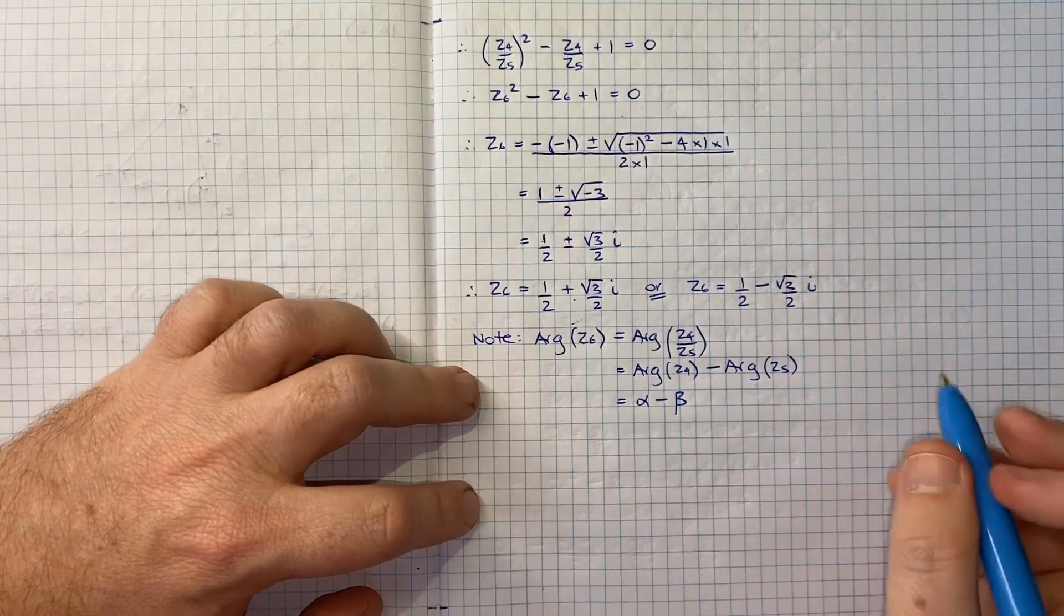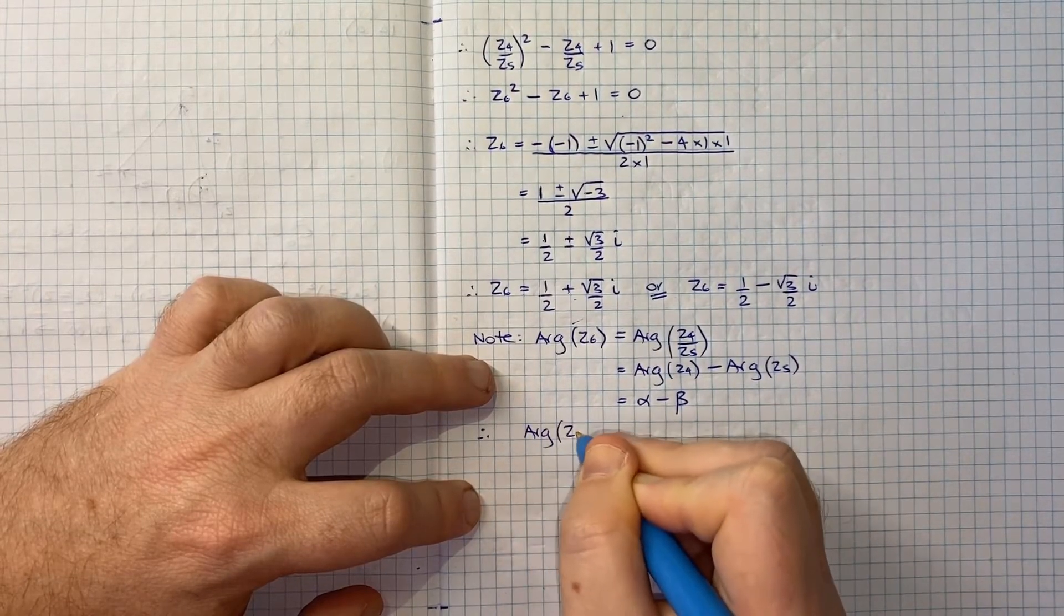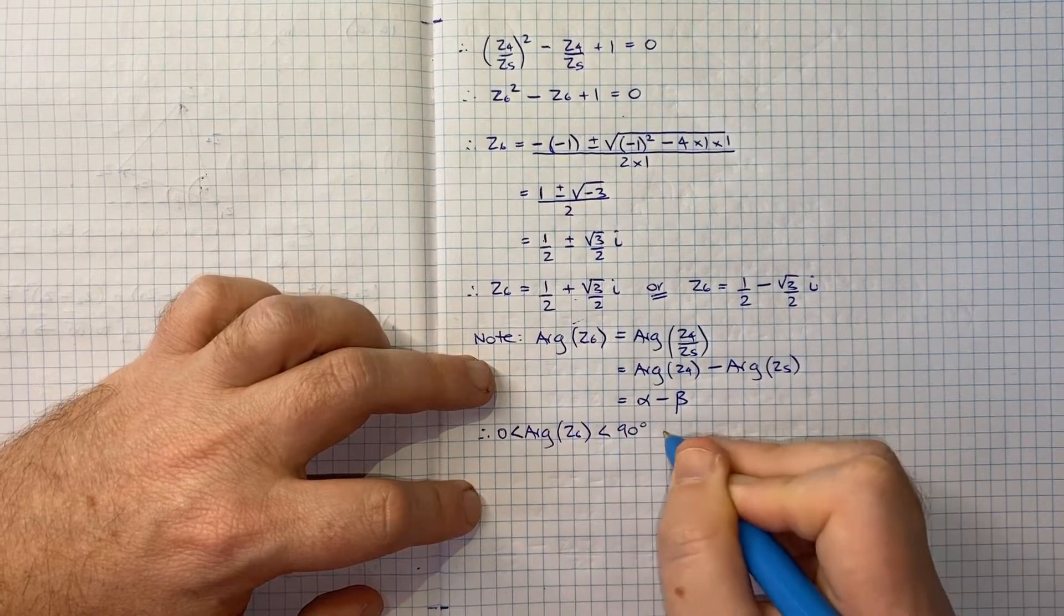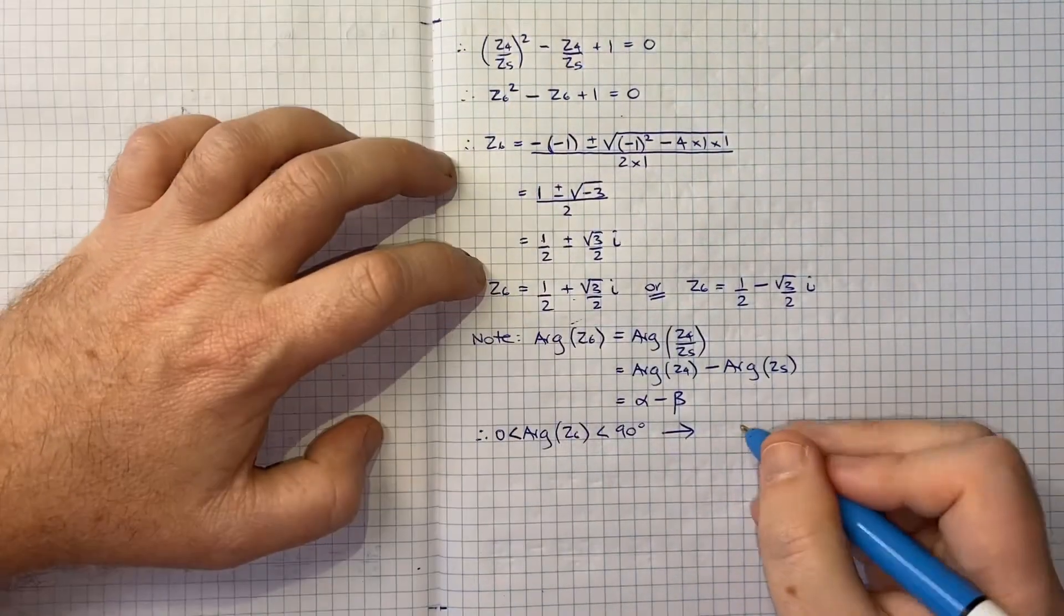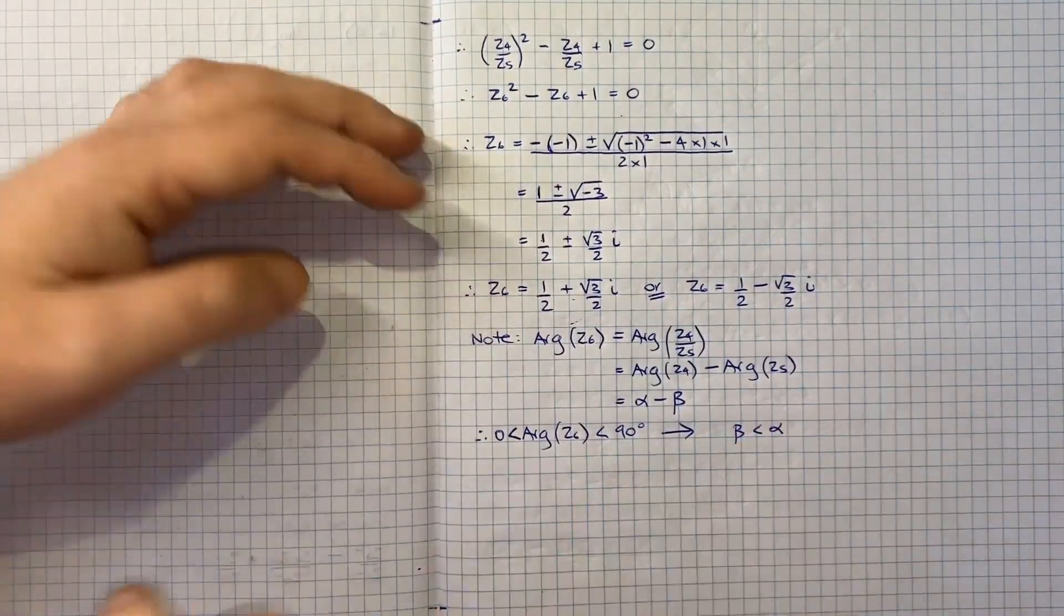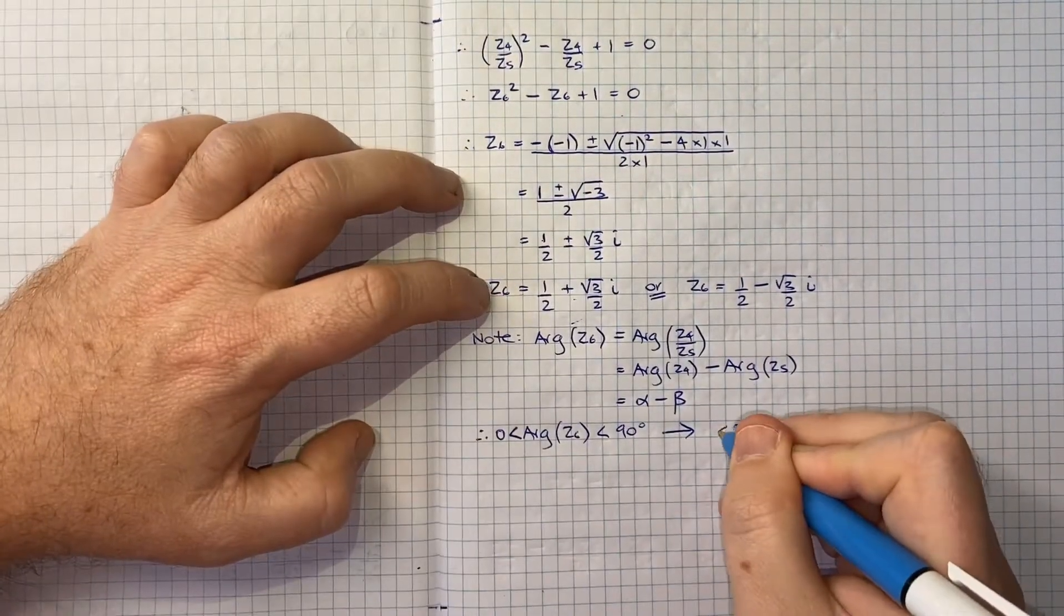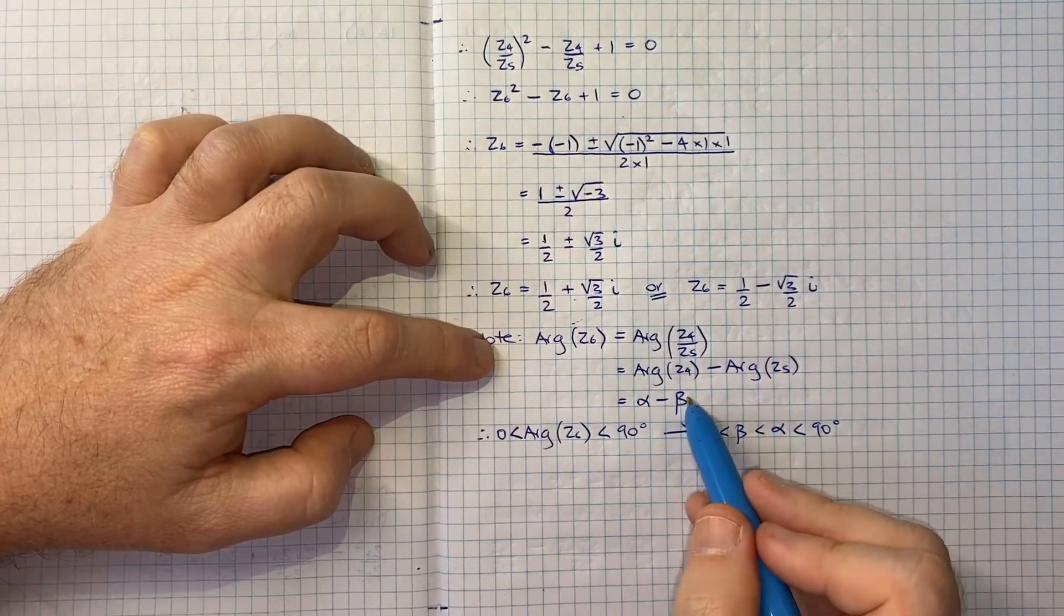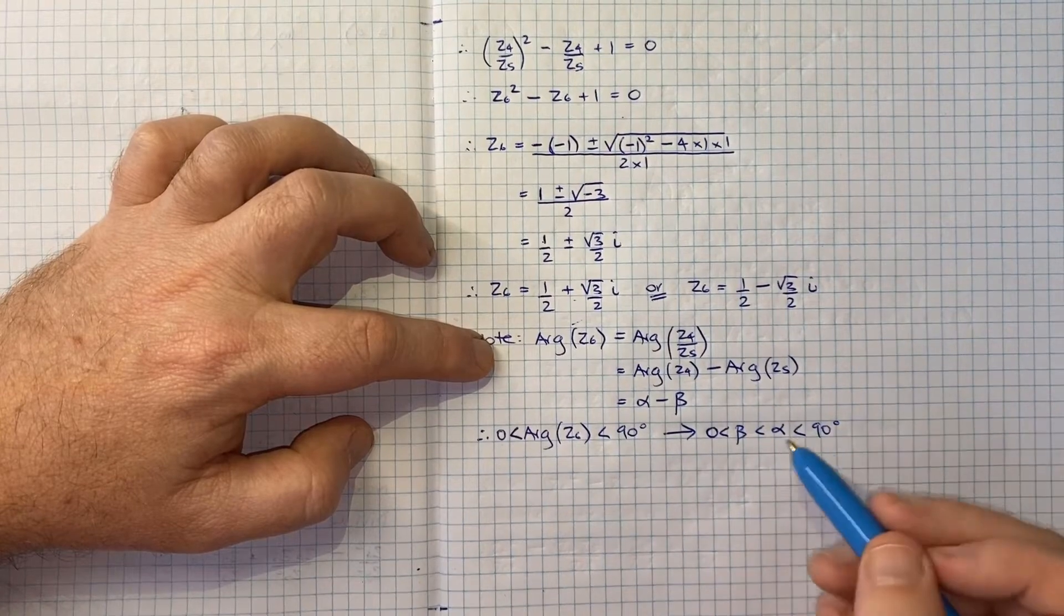I think what we can say is we can conclude that the argument of Z6, if it's alpha minus beta, we know it's going to be greater than zero and less than 90 degrees. The reason we can say that is because we know that beta is less than alpha. It's a smaller angle than alpha. We know both of them are positive angles and both of them are less than 90 degrees.